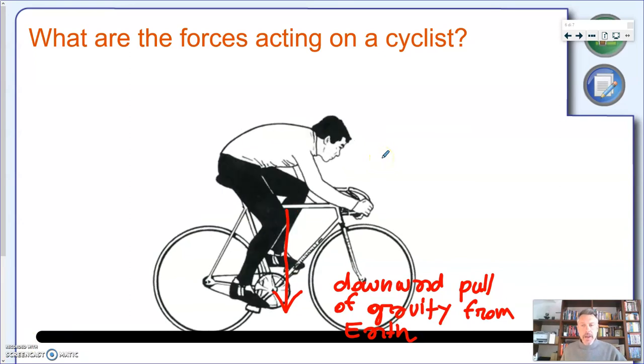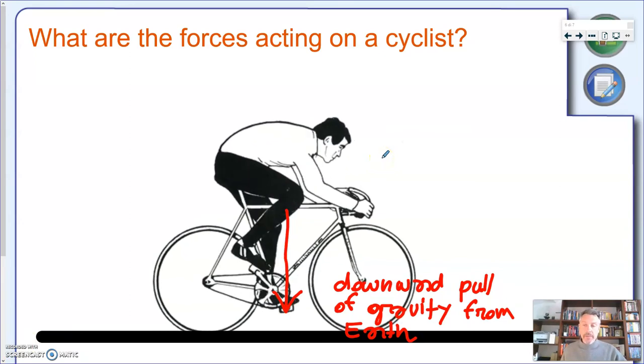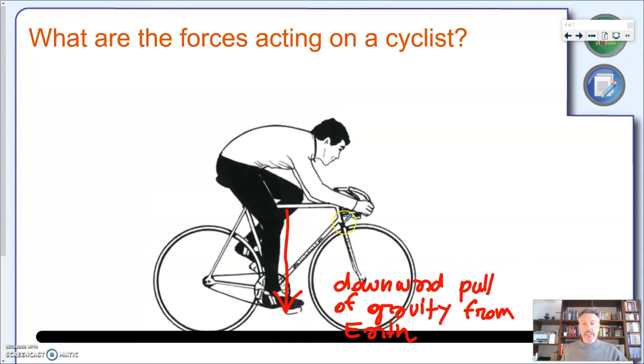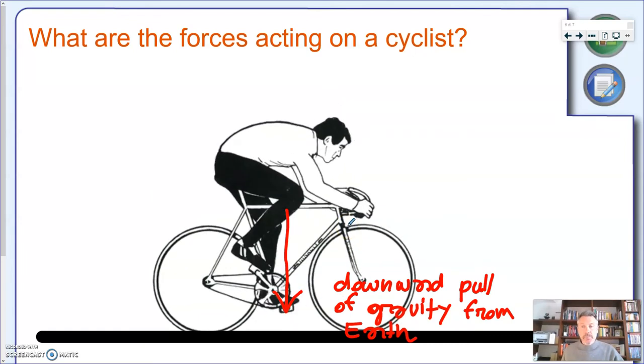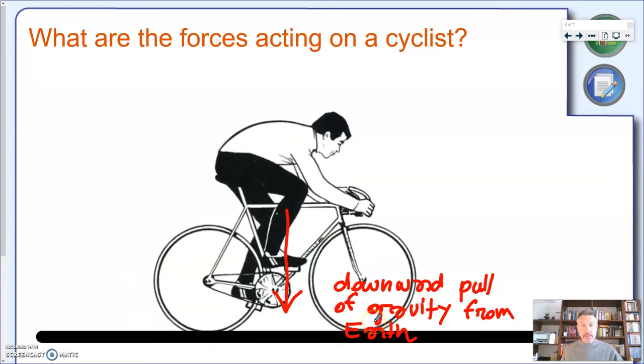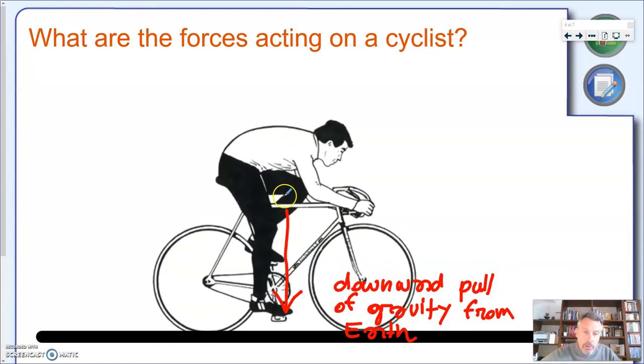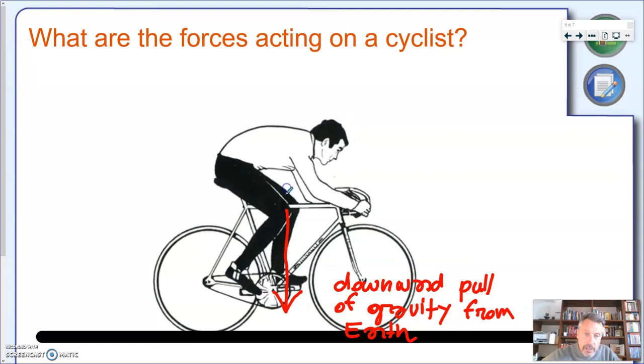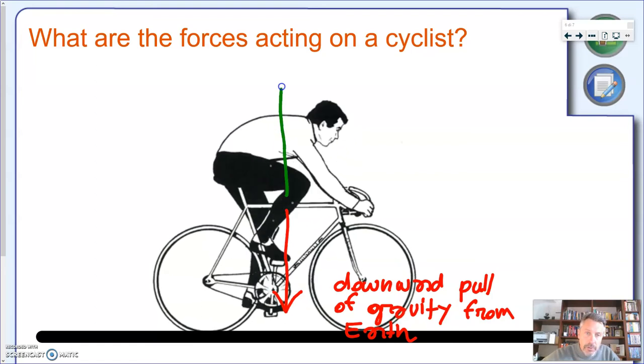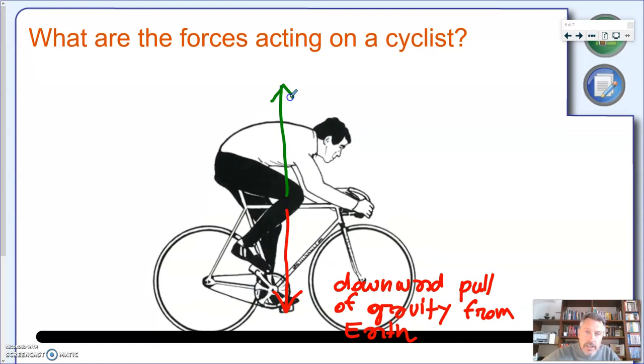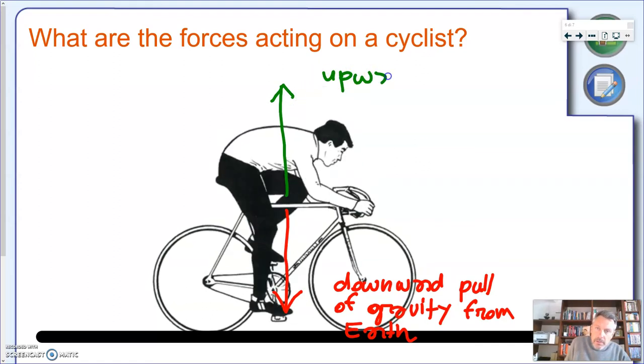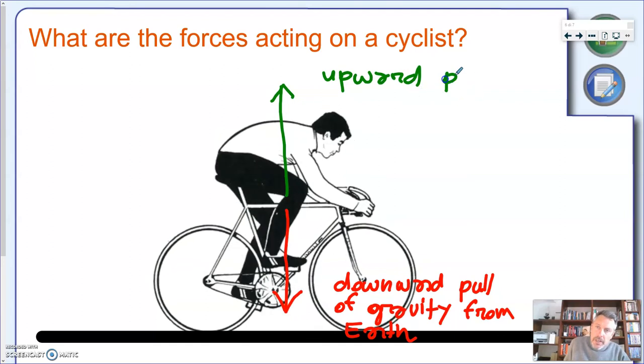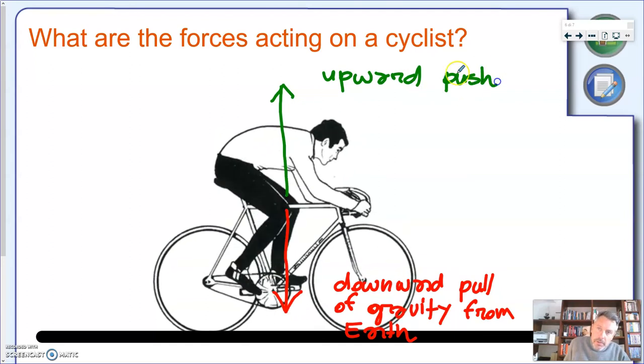In the same way as the example for the apple, of course, if this was the only force acting on the cyclist, the cyclist would be falling down. Now, this is prevented by the ground itself. So, we're going to also have an upward force. So, we have an upward push from ground.